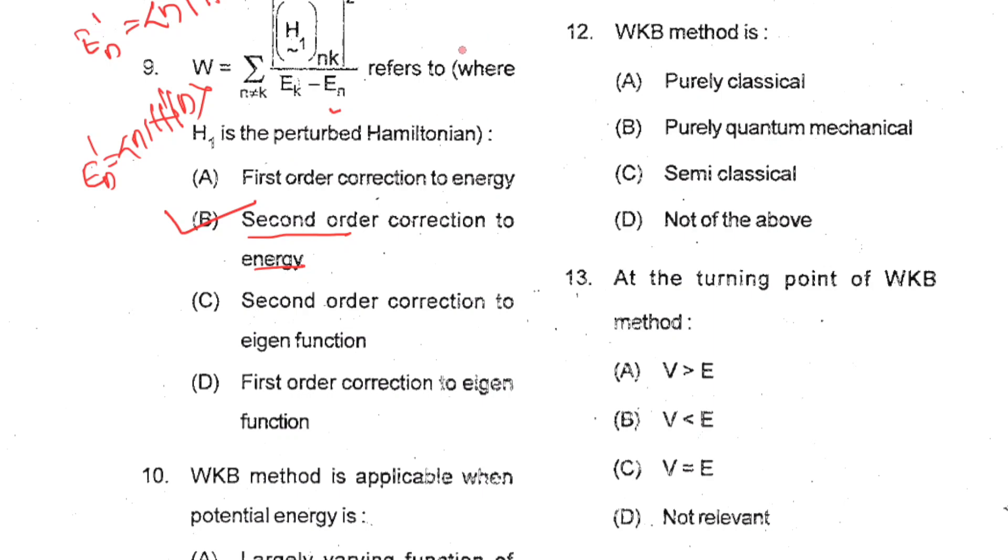Similarly, you should remember the first order correction to the wave function. The first order correction of the wave function of the N state is given by summation M not equals to N of ⟨ψM|H'|ψN⟩ divided by (EN0 - EM0) times ψM. You should remember all these three expressions.